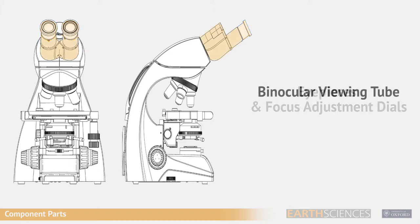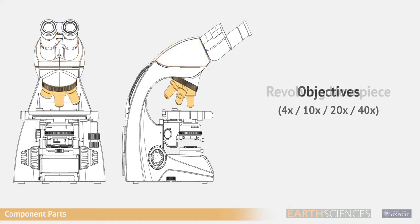The parts of the microscope are as follows: eyepieces and focus adjustment dials, binocular viewing tube, head, revolving nose piece, and objectives.